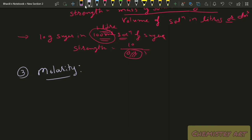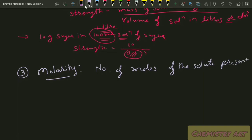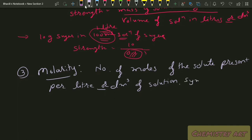Molarity can be defined as the number of moles of the solute present per liter (or dm³) of solution. Its symbol is capital M.